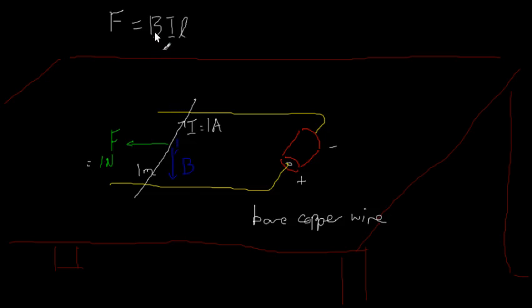Alright. It is chosen such that in SI units, when the force is 1 newton, current is 1 ampere, and the length of the wire is 1 meter, then we define the unit of magnetic field strength as 1 tesla. So just to check that it is correct...